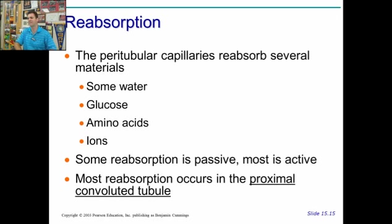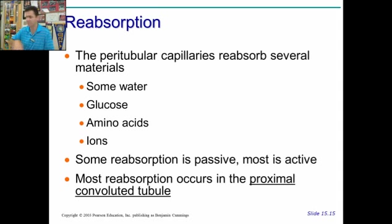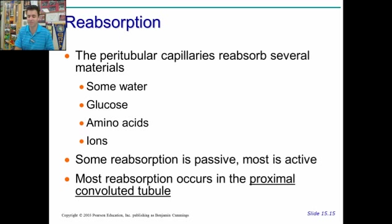Reabsorption means taking stuff back into the blood. This includes a lot of water, sugar — you don't want to pee it out, you want to keep as much sugar as you can — amino acids that have passed in, and some ions depending on your electrolyte levels: sodium, potassium, hydrogen ions. Some reabsorption is passive but most of it is active — active transport uses ATP. Most reabsorption, most importantly, occurs in the proximal convoluted tubule very early on, right after it's entered the glomerular capsule.